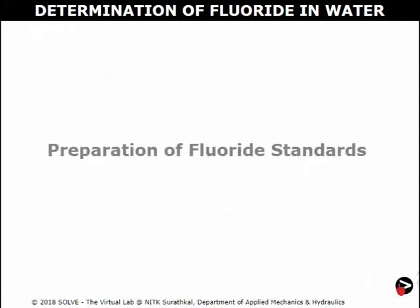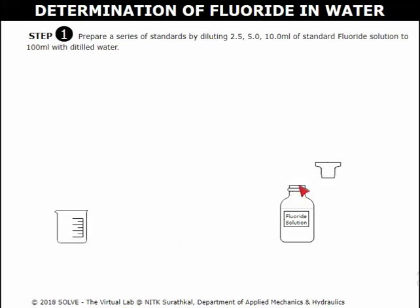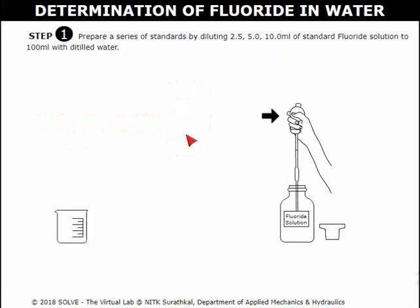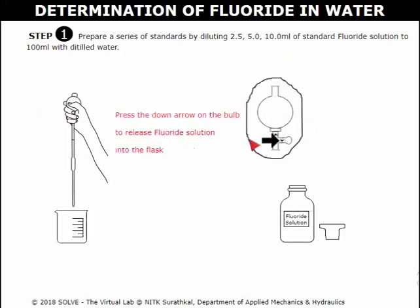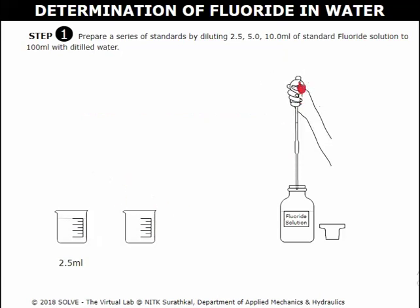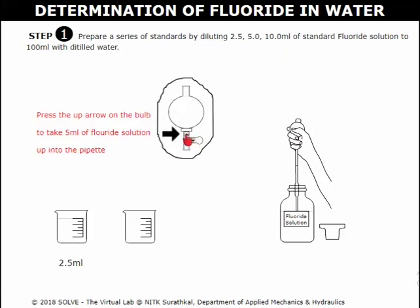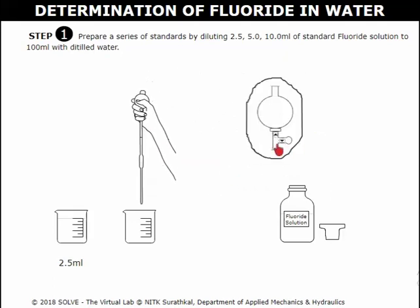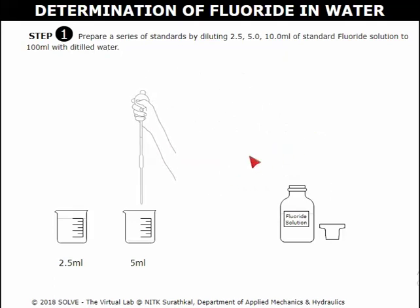Preparation of fluoride standards. Click here to open the bottle of fluoride solution. Click on the pipette to place it in the fluoride solution. Click on the upward pointing arrow to pipette the solution. Click on the downward pointing arrow to release the solution into the beaker. Dilute the solution by adding distilled water up to the 100 ml mark. Pipette 5 ml of solution and add it into another beaker, then add the distilled water.